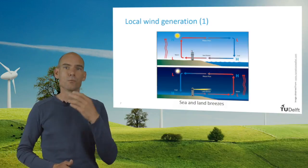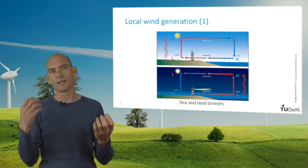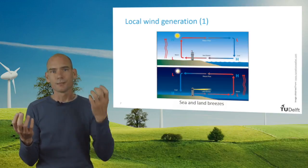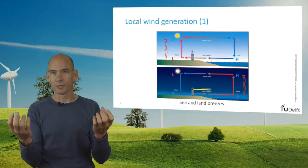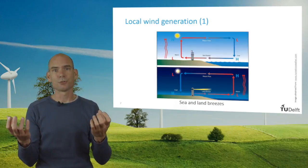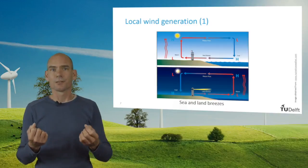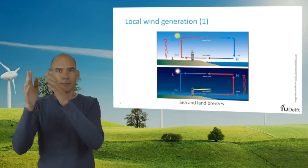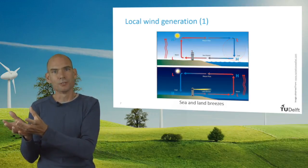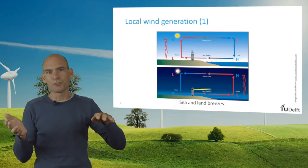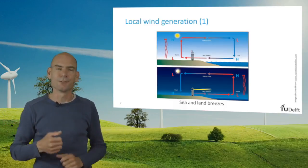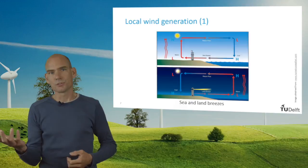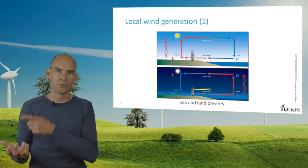If we have a coastal region with land on one side and sea on the other side, we also get temperature differences. During the day, the land heats up faster than the ocean, which has quite a constant temperature during the season. This means that the air rises over land, leading to a low pressure region, and it drops over sea leading to a high pressure region. This causes a sea breeze coming from the sea to the land. At night the Earth's surface cools down, while the sea keeps the same temperature and we get a reversal in the pattern.